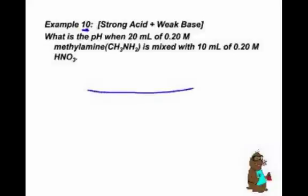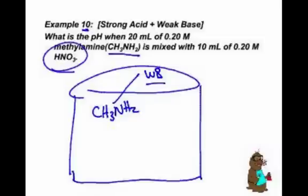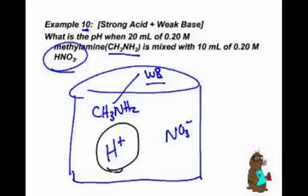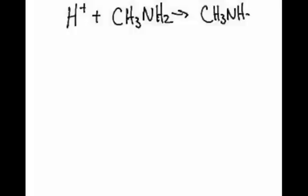We have a strong acid, a weak base. We've got a beaker with big hair. And what have I got in the big hair? I've got 20 milliliters of methylamine, CH3NH2. That is a weak base. And I have nitric acid. That's H+ and NO3-, because it is a strong acid. The only thing that matters is the weak base and the strong acid. We don't care about nitrate. So, we write the acid with the base. H positive plus CH3NH2 makes CH3NH3 positive.